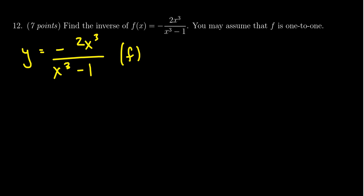We then want to switch to the graph of f inverse, and we do that by switching the x and y variables. So the y becomes an x, and all of the x's become y. So you get negative 2y cubed over y cubed minus 1.